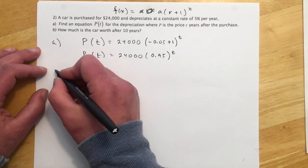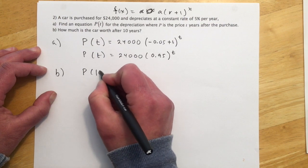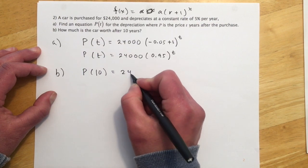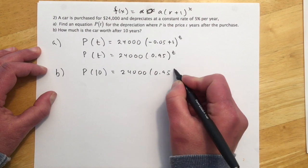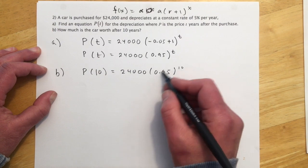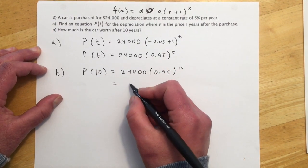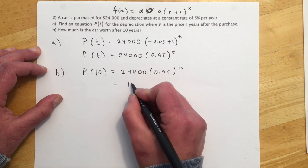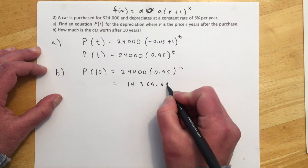And then for part B, they're asking us to find P(10). So we'll just chunk that in right here. And plug all that in the calculator. Do this part first and then times that at a second. And for that, I got 14,369.69.